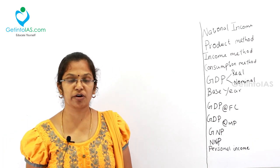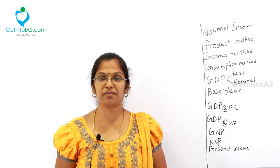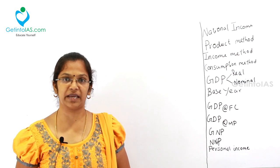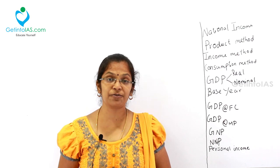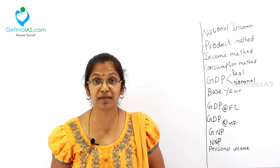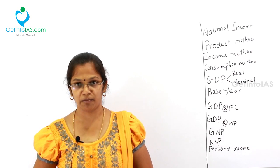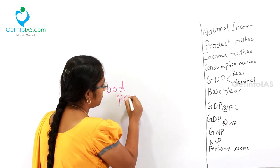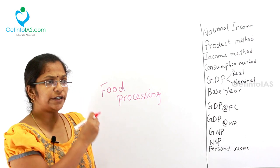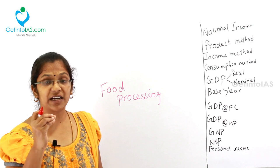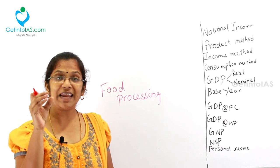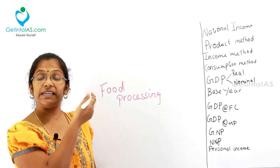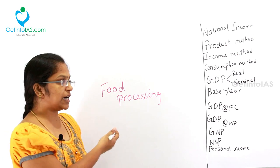Coming to micro economics and macro economics — what is the difference? In NCERT also, you would have two books: one is micro economics and the other is macro economics. The study of individual markets and their demand and supply is called micro economics. For example, if you take the food processing industry, you study how employment and production are happening in that individual market. Studying food processing or textile industry — all these come under micro economics.